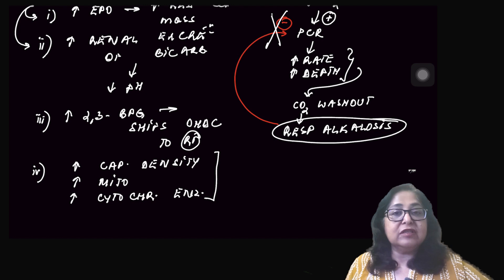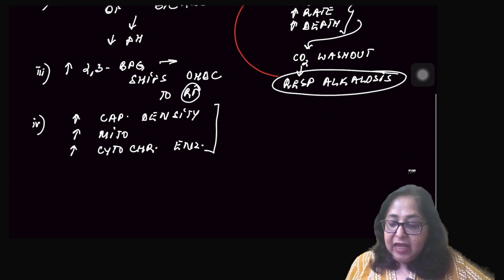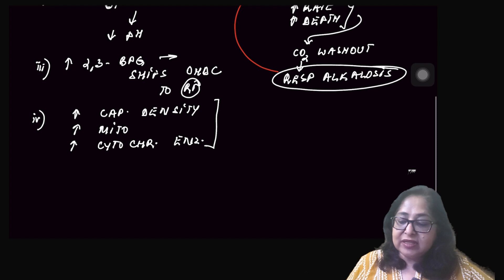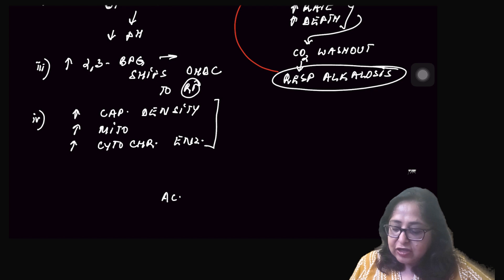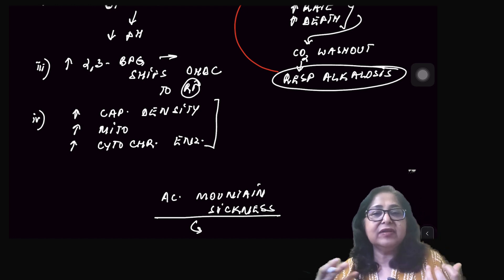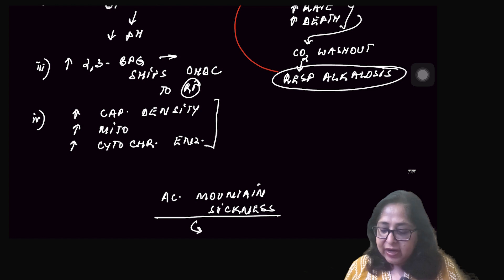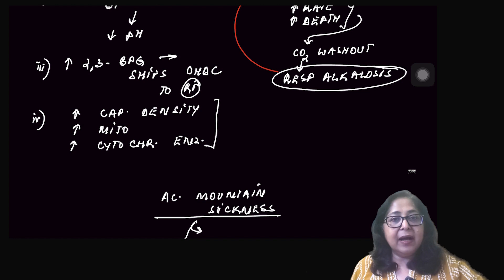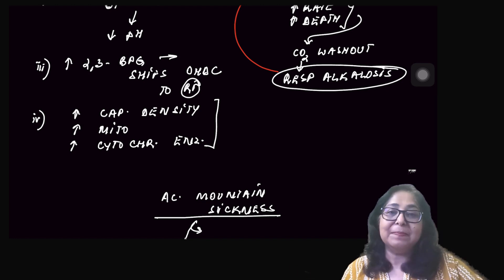The third thing which can happen is there is an increase in 2,3-BPG and this shifts the oxygen hemoglobin dissociation curve to the right and rightward shift means more delivery of oxygen to the tissues. At the tissue level, there is an increase in capillary density. There is increase in the number of mitochondria. There is increase in the number of enzymes, cytochrome enzymes, basically to increase the oxygen utilization at the tissue level. This is the process of acclimatization. If acclimatization does not occur properly, the patient can go into what is known as acute mountain sickness. Acute mountain sickness can be mild like in this case, where there is headache, nausea, vomiting, fatigue, sleep disturbances or it can take on a very severe form. There could be a high altitude cerebral edema and high altitude pulmonary edema.